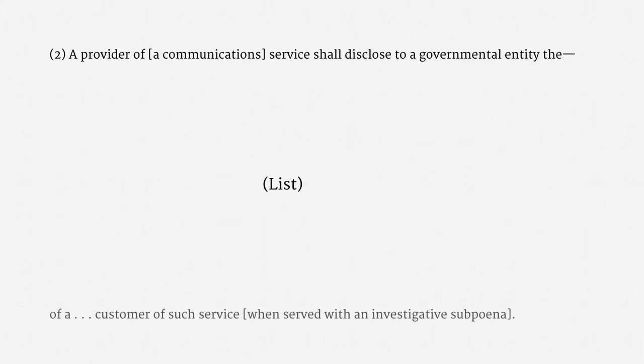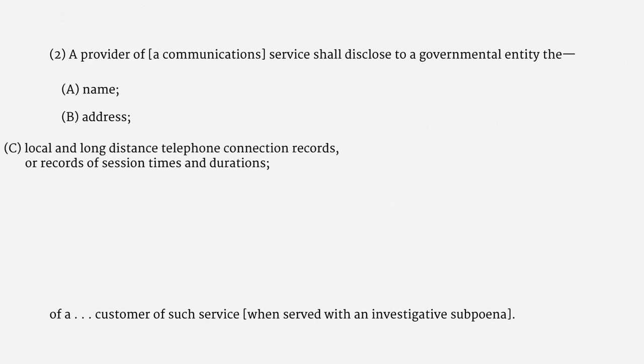There's a specific statutory provision within the SCA that addresses these categories of information. The provision says that a provider of a communications service shall disclose to a governmental entity — and then it lists some categories of information — of a customer of such service, when served with an investigative subpoena. The list of information includes exactly what we've been talking about: account information like a name and address, as well as call records.